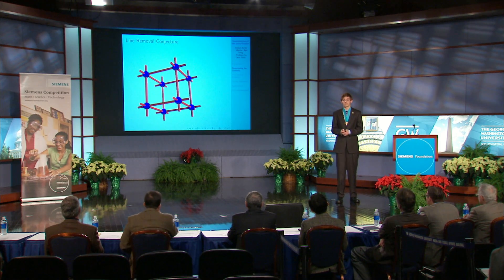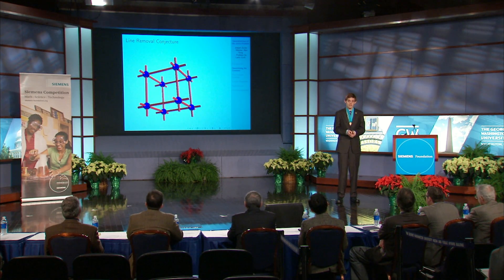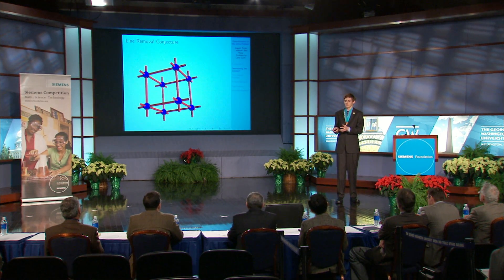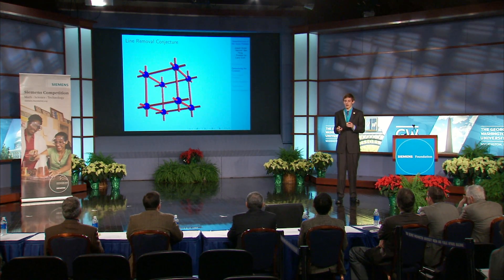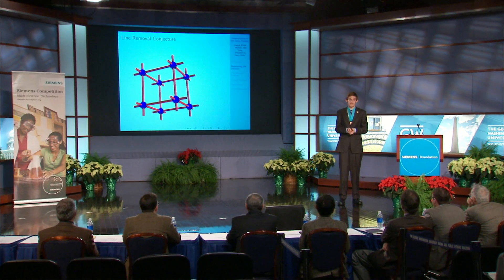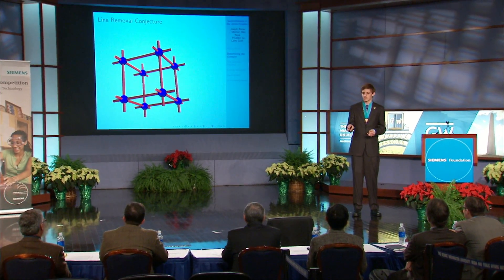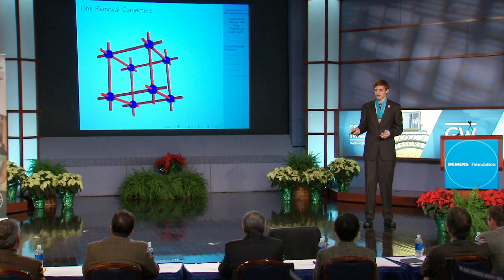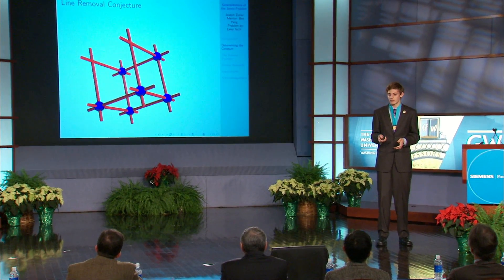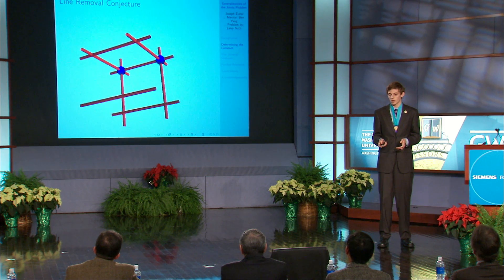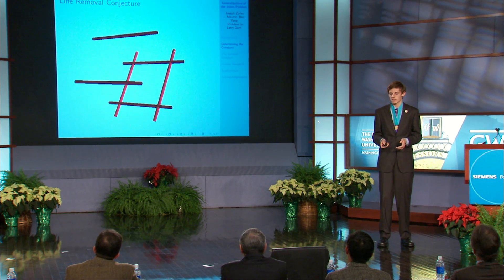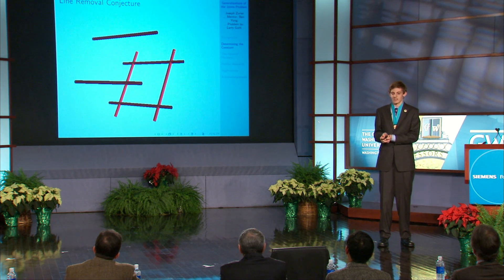The line removal conjecture states that if we have a configuration of lines and joints in three dimensions, then we can remove half the lines one by one such that each line contains only a small proportion of the total number of joints remaining — about 6 times the number of joints remaining, all to the 1/3 power. But once we've finished removing these lines, all the joints are gone. Consider a grid construction with 12 lines that produce 8 joints. We take away half the lines — 1, 2, 3, 4, 5, 6 — and we've only removed one or two joints at each step, but now all the joints are gone. The conjecture says this is possible no matter how large and complicated we make the construction.